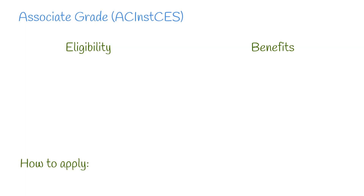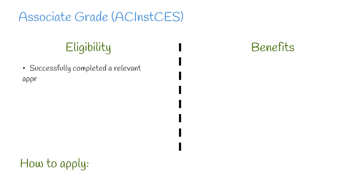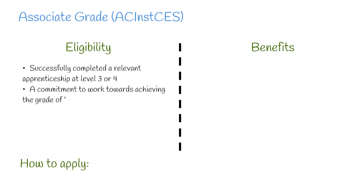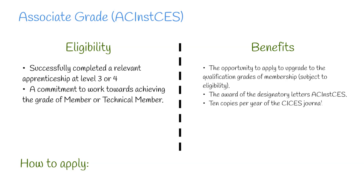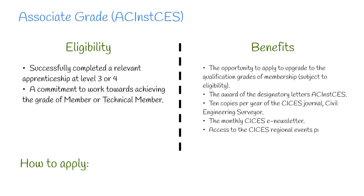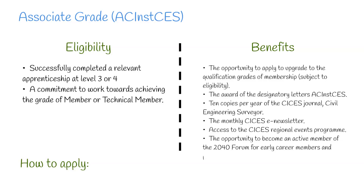Next up we have Associate grade. This grade includes the designation ACInstCES, which can be used next to your name. To be eligible, you'll need to have successfully completed a relevant apprenticeship at level 3 or 4 and a commitment to work towards achieving the grade of member or technical member. Benefits include the opportunity to apply to upgrade to the qualification grades of membership, the award of the designatory letters ACInstCES, 10 copies per year of the CICES journal, the monthly CICES newsletter, access to the regional events program, and the opportunity to join the 2040 forum for early career members.